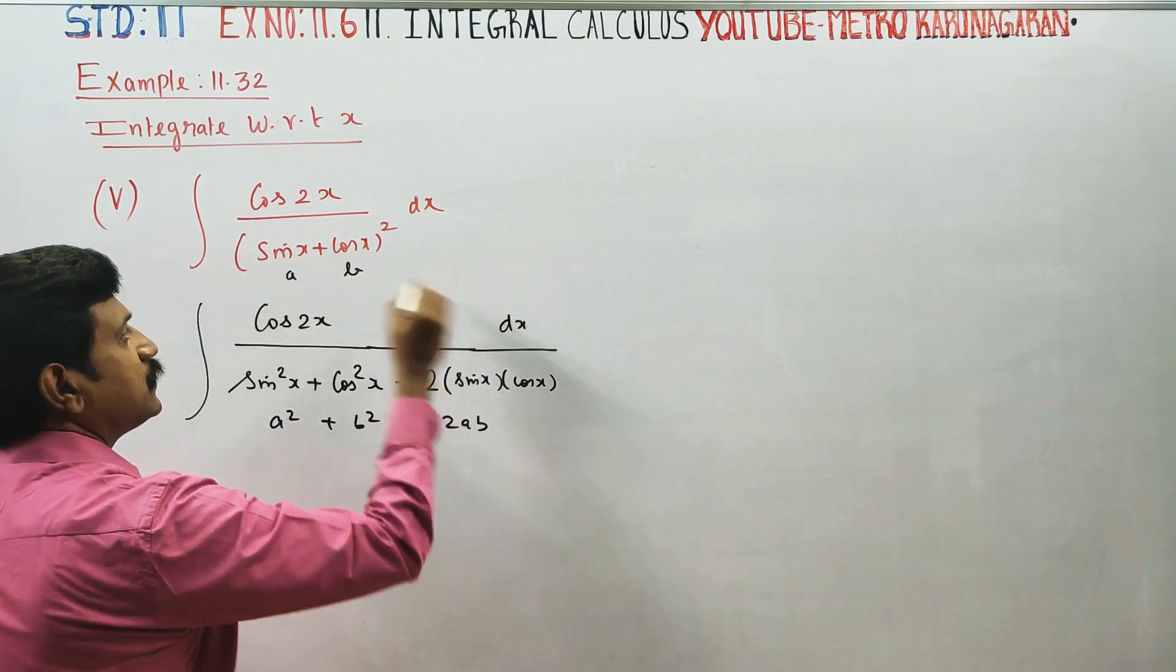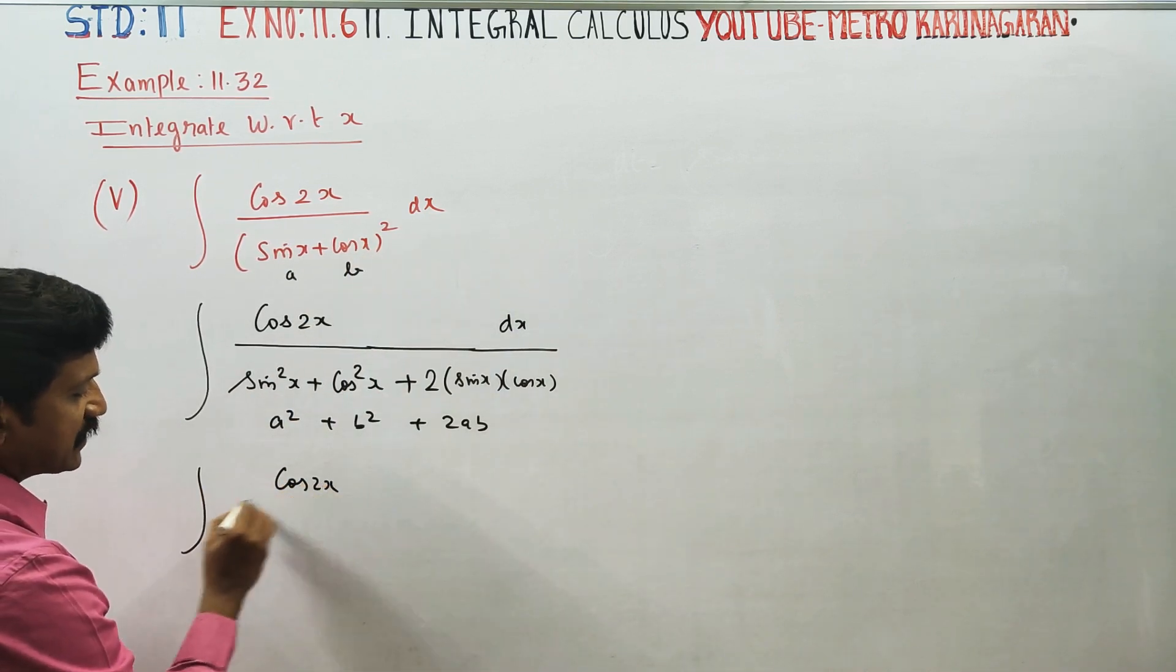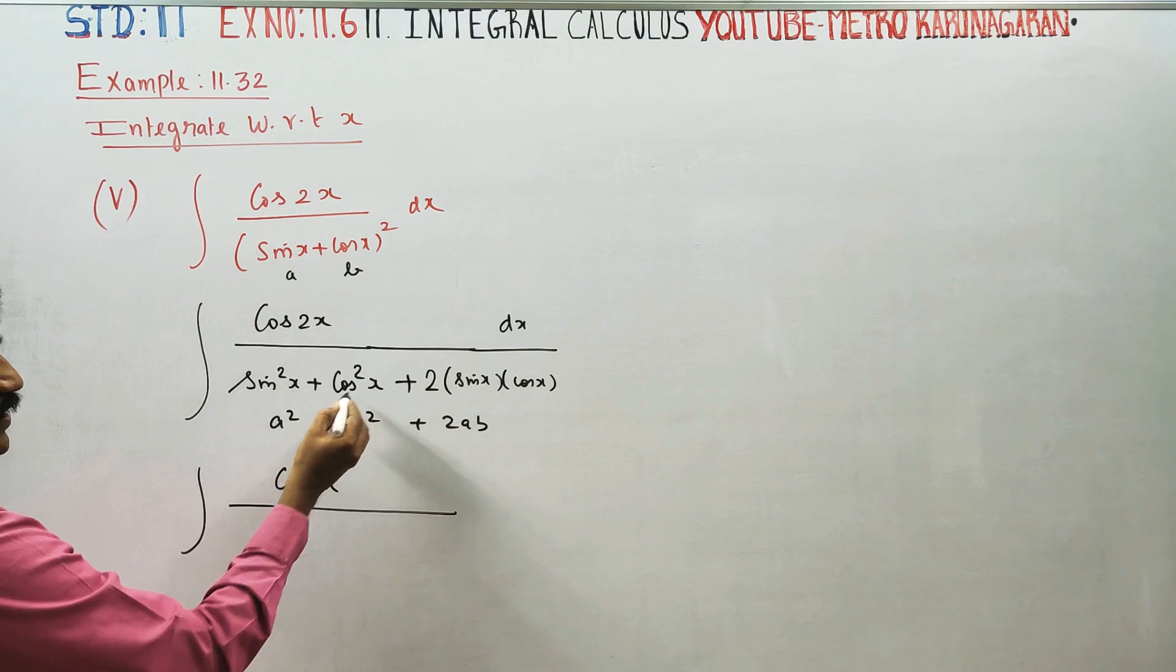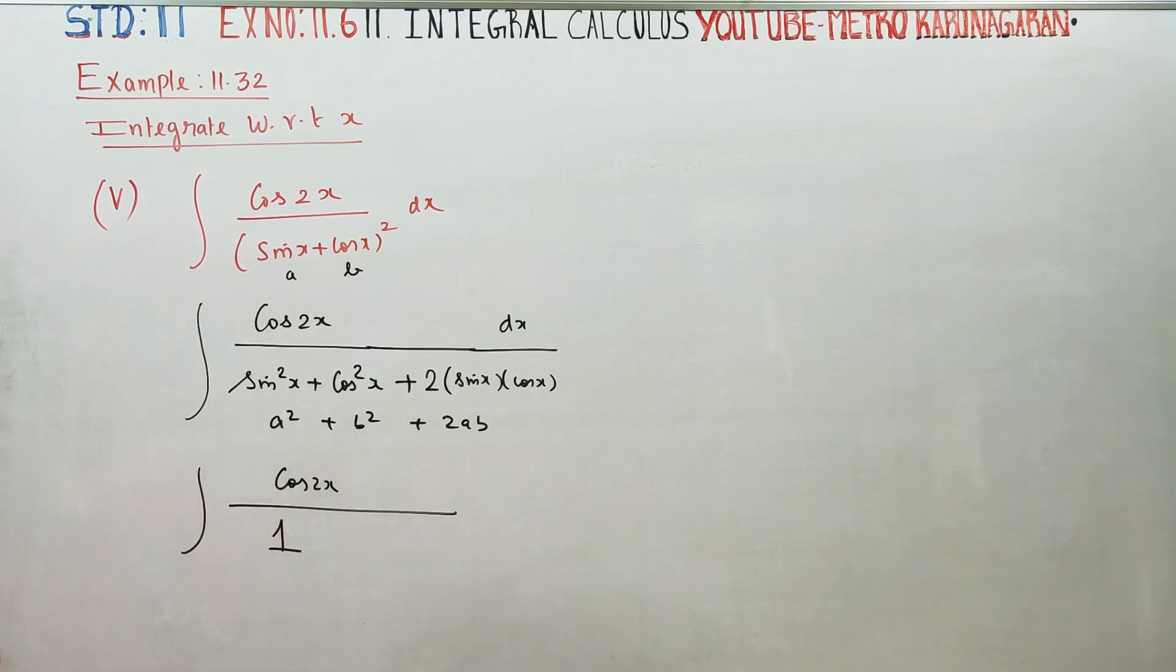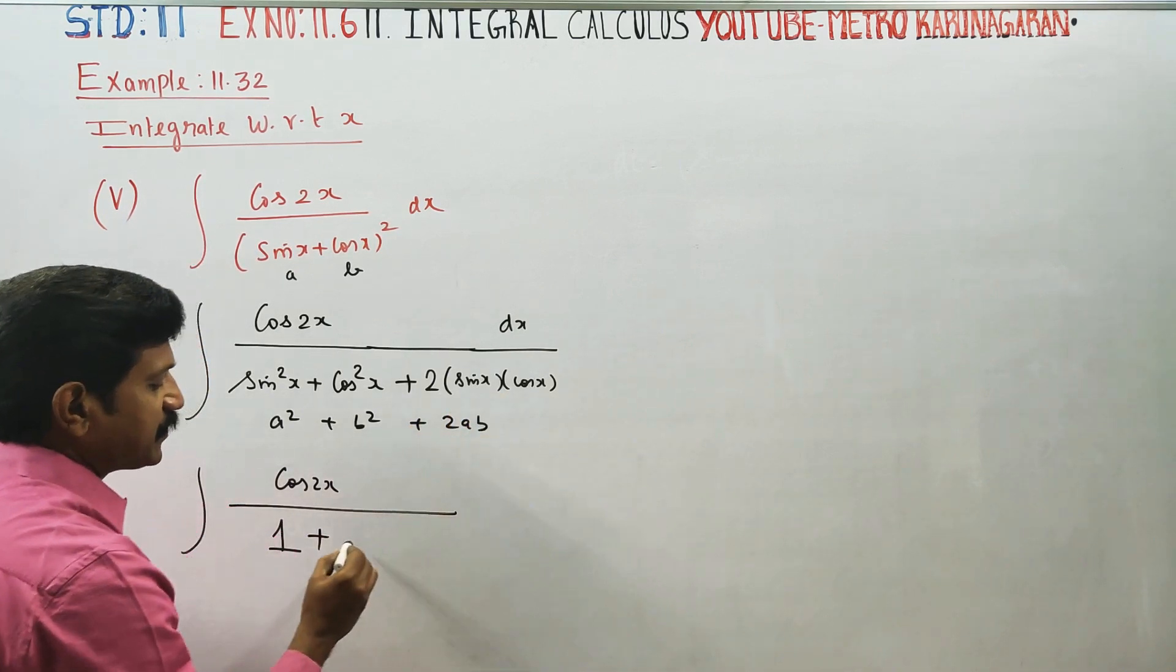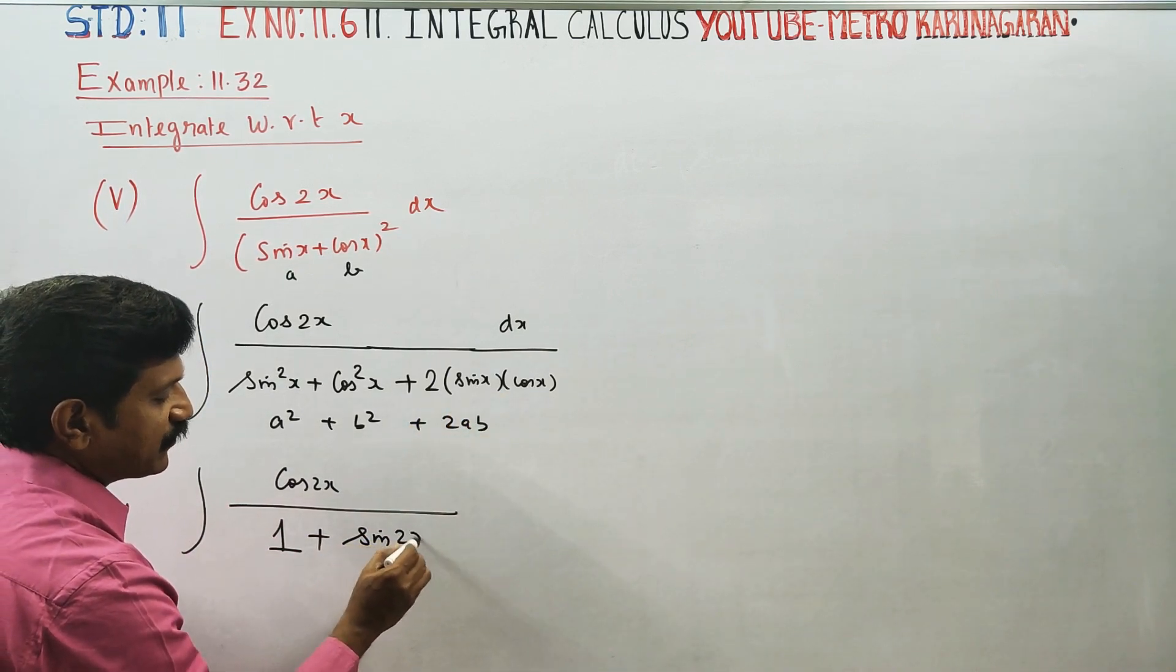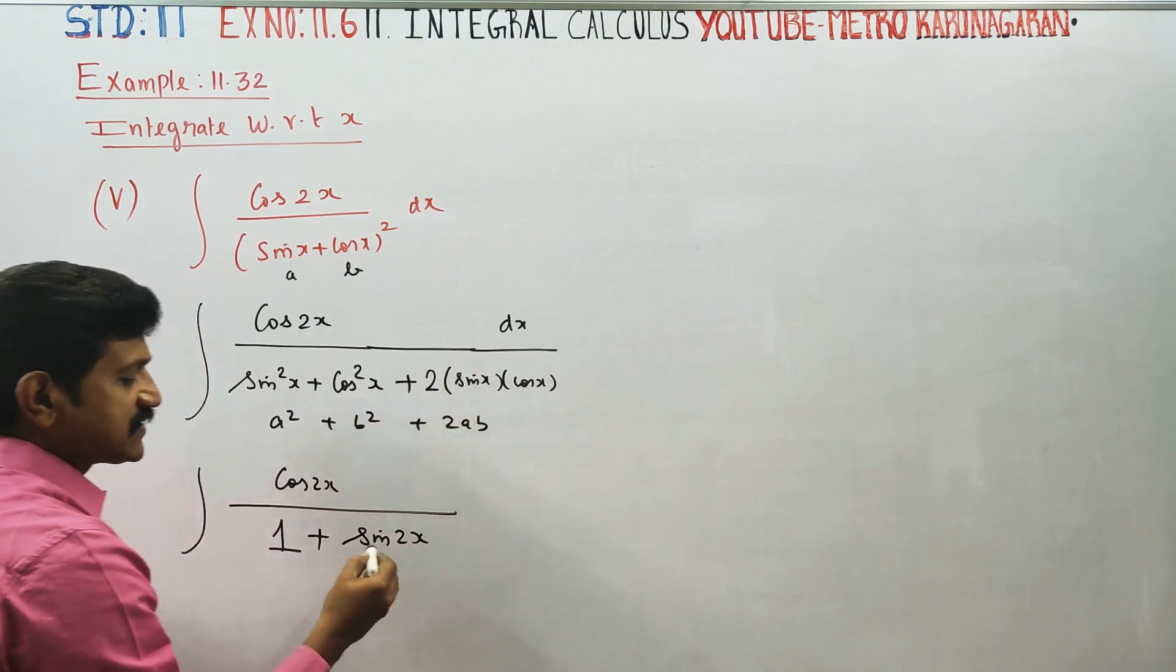First, I open it: integration of cos(2x). Sin^2(θ) + cos^2(θ) = 1, this is an identity formula. Also, 2sin(x)cos(x) can be written as sin(2x), which is the double angle formula.